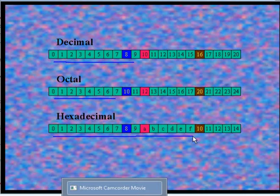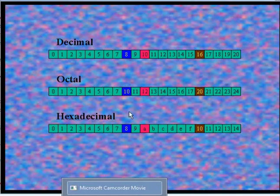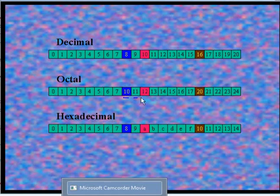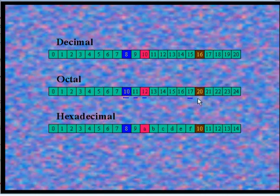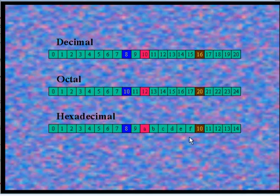Observe carefully: in the octal number system, after number 7 you get 10, then 11, 12, up to 17, and after that 20. In the hexadecimal number system, after the number F you get 10, then 11, 12, and so on.